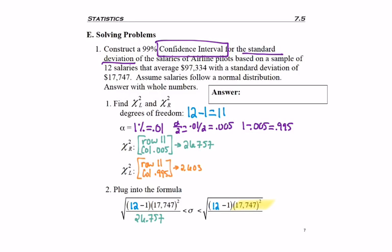N minus 1 times s squared divided by chi-squared left. Hopefully you can enter that straight through into your calculator. Just 11 times 17,747 squared divided by 26,757. And then take the square root of that. You should get 11,378.96 for the low end.